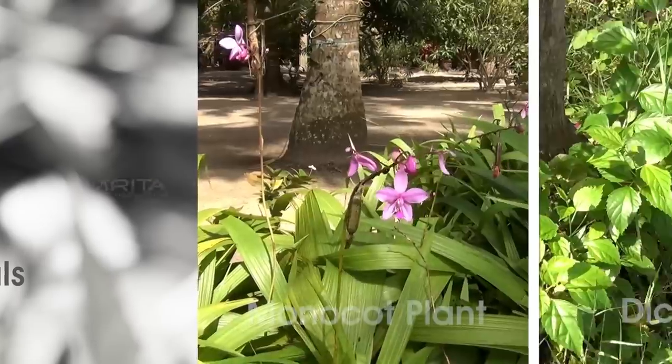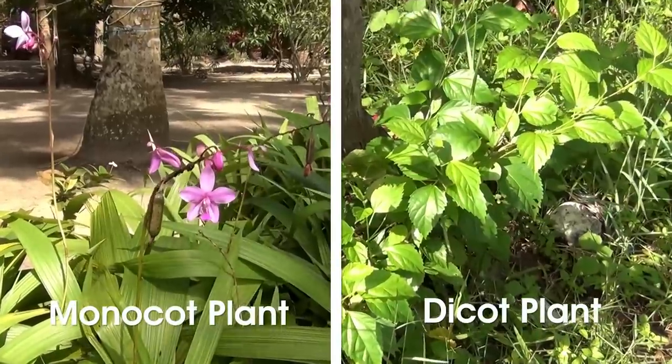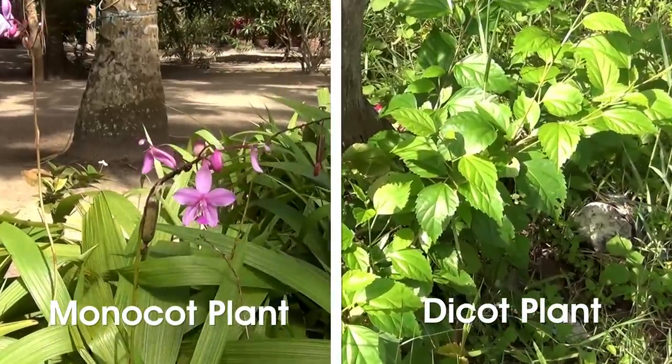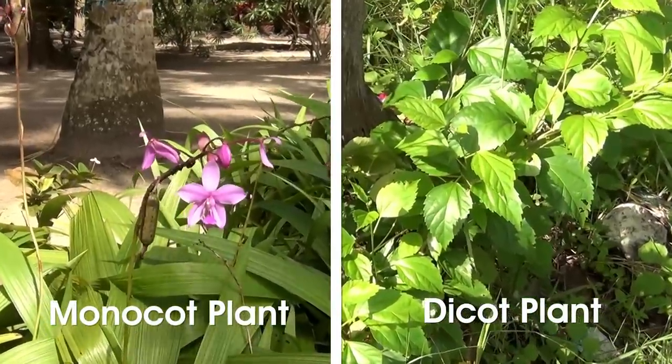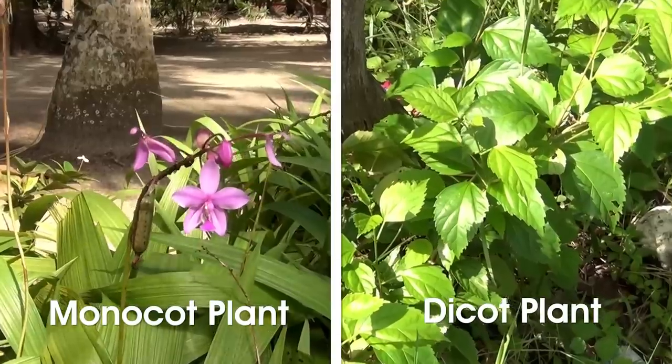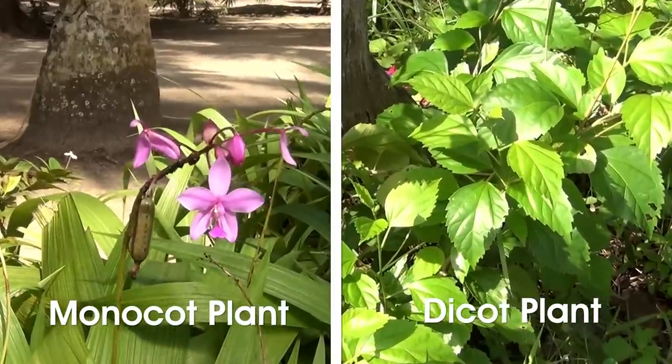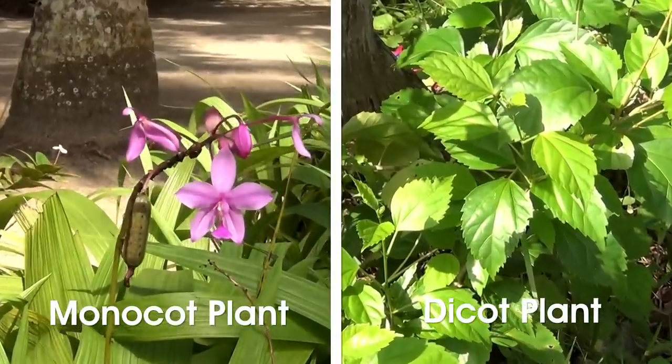From these observations, we can conclude that the orchid is a monocot and the hibiscus is a dicot plant.